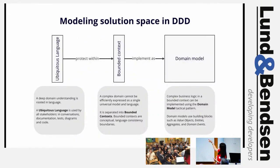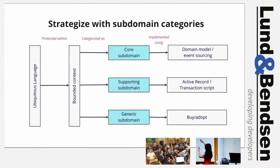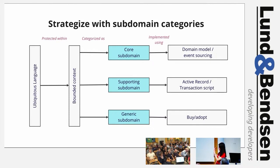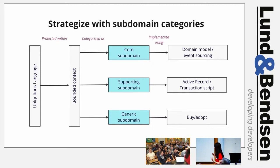Sandwiching the problem space into the solution space, we have the strategize part with subdomain strategies. DDD distinguishes between three types of subdomains: core subdomain, supporting subdomain, and generic subdomain. Core subdomain is where your company has a competitive advantage — a source of competitive differentiation through innovation or process optimization. Supporting subdomains are where you don't have a competitive advantage from them but also can't buy them, so you build them yourself. Generic subdomains are where everybody does it the same way and you can buy instead of build.